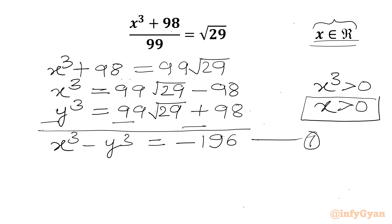Equation number 1. Now we will multiply these two. So x cubed times y cubed will be equal to 99 root 29 minus 98 times 99 root 29 plus 98.